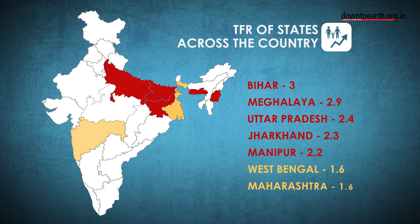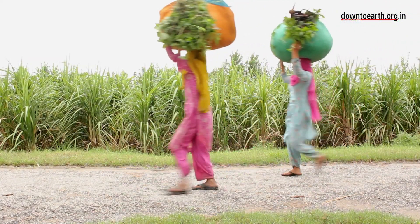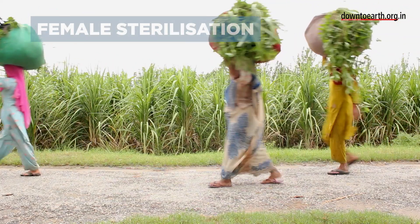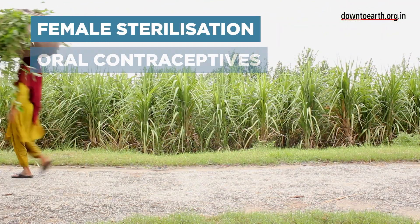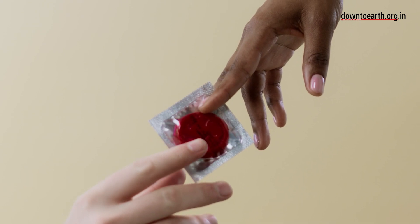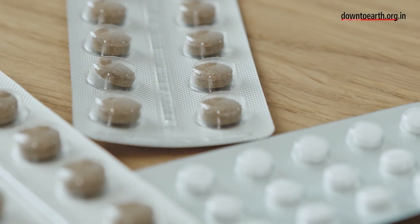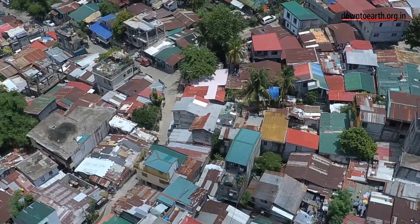West Bengal and Maharashtra have the lowest fertility rate in the country at 1.6. The burden of family planning still remains with women, as female sterilisation has increased along with the use of oral contraceptives.